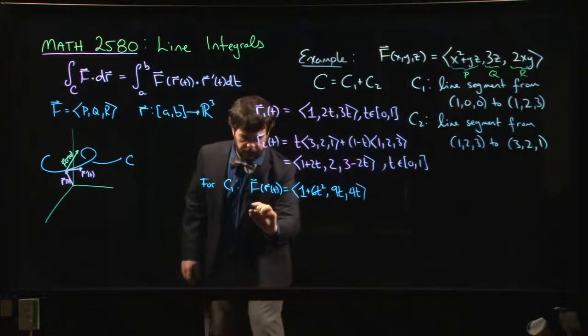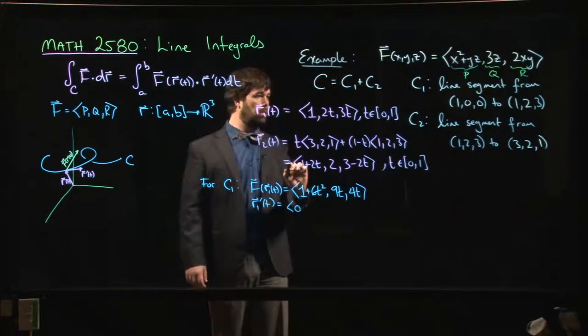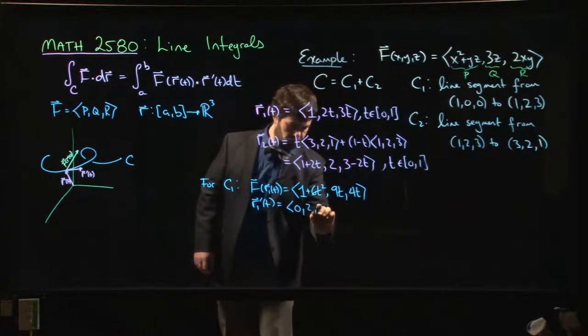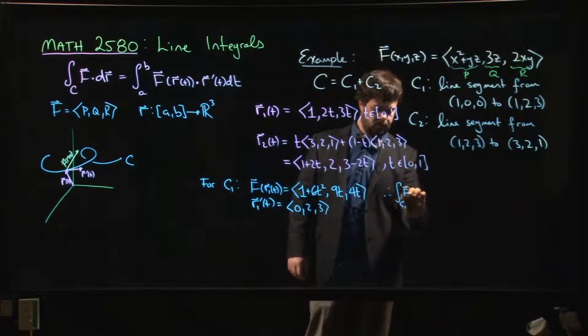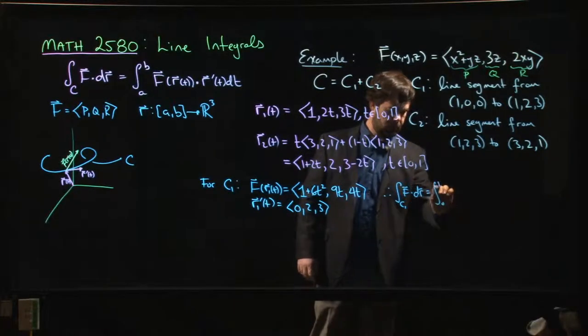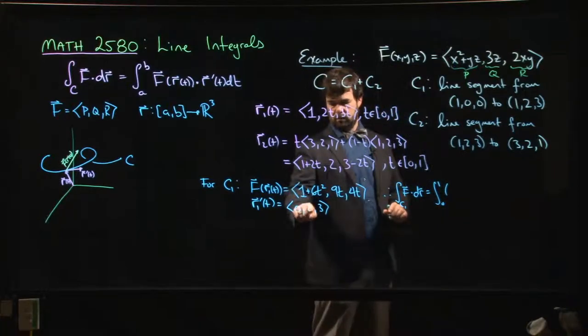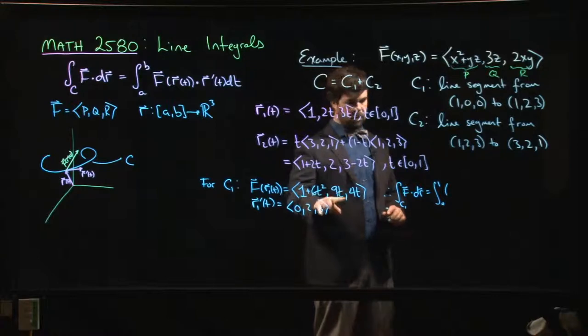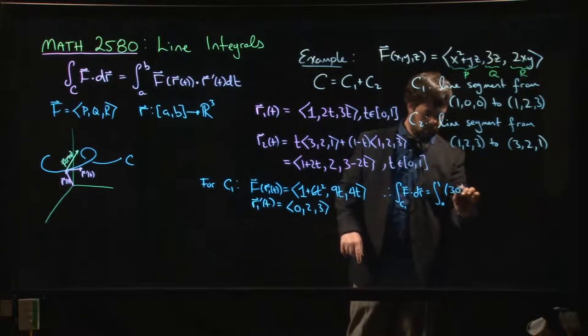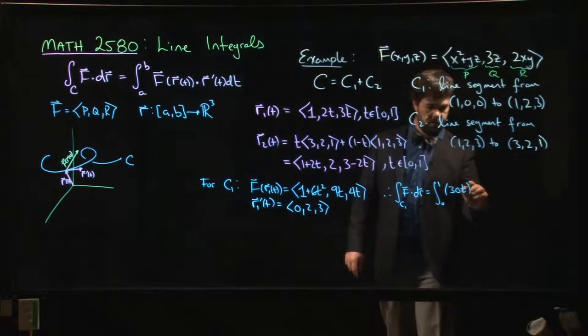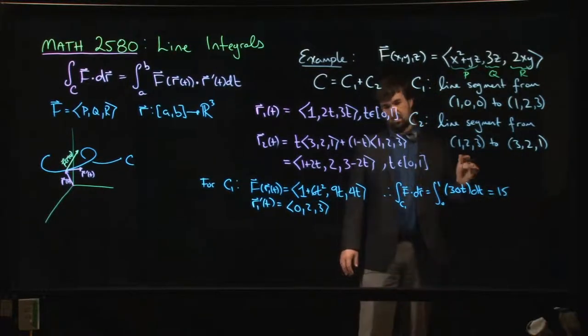We know that R1 prime of t is just going to be 0, 2, 3. So that means that the integral along C1 of F dot dR is the integral from 0 to 1. We've got to do the dot product. 0 times 1, 2 times 9t, so 18t, and then 3 times 4t. So 18t plus 12t—once you work out the dot product, 30t—integrate with respect to t, and that's going to come out to a value of 15. Not so bad.